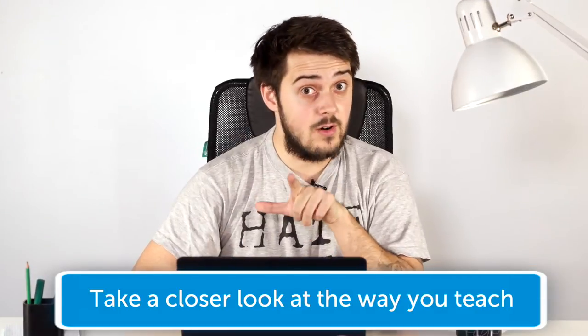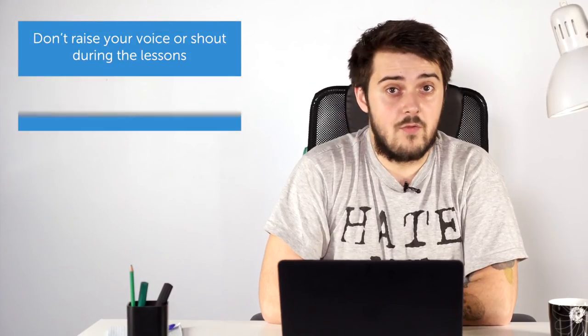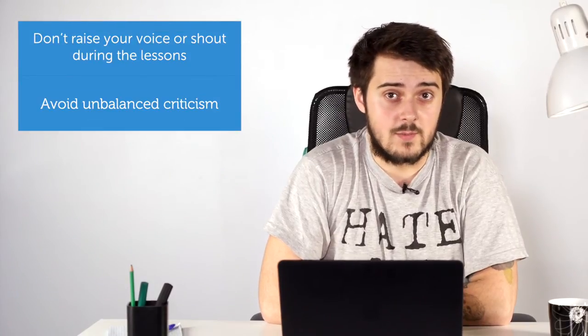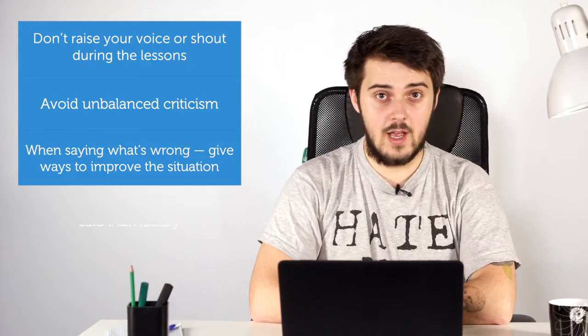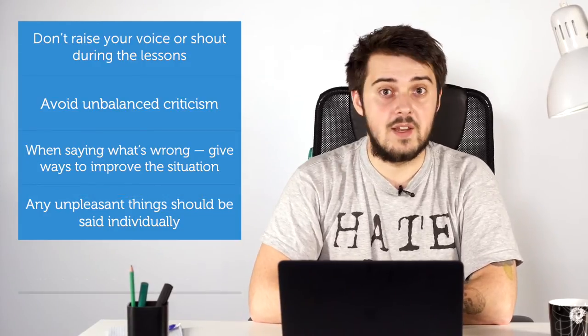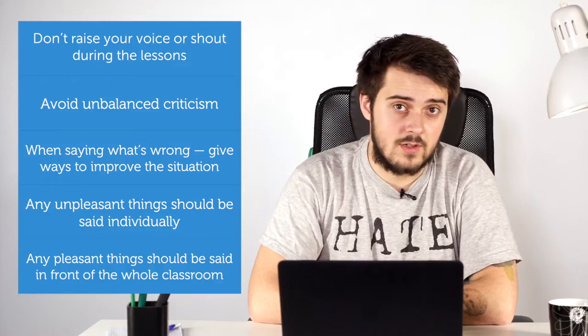The first and most important disclaimer – take a closer look at the way you teach and consider this checklist of psychological safety on your lessons. Don't raise your voice or shout during lessons. Avoid unbalanced criticism – when saying what's wrong, give ways to improve the situation and say what's good. Any unpleasant things should be said individually; any pleasant things should be said in front of the whole classroom. Same rules apply to the teacher and to the students. This is the necessary minimum to avoid any psychological harm to your sensitive teenage students.